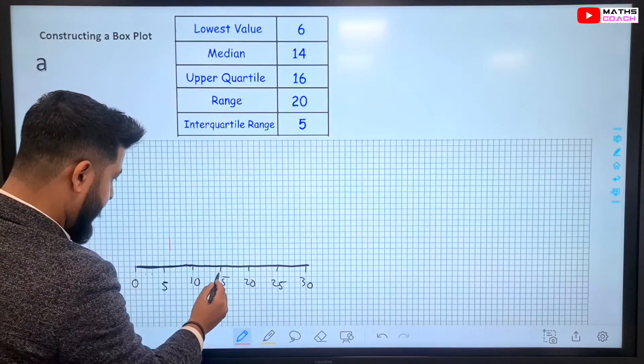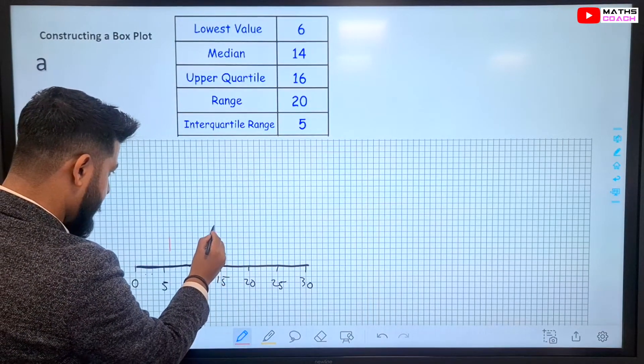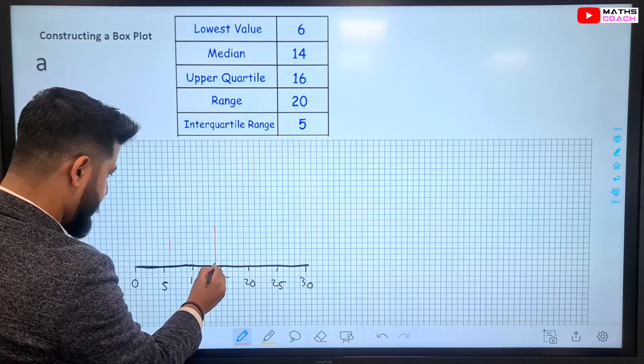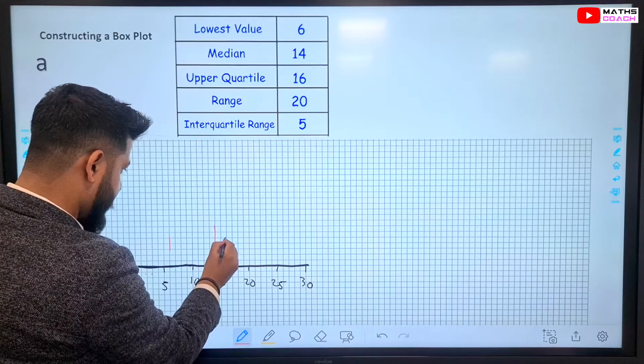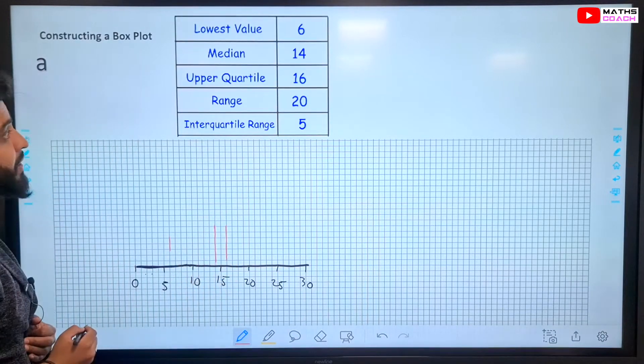The median is 14, which is a bit bigger than the other line, like that. The upper quartile is 16, which would be the same size length as the median.